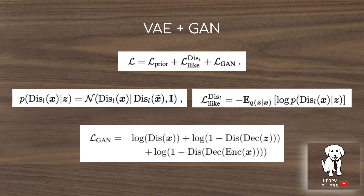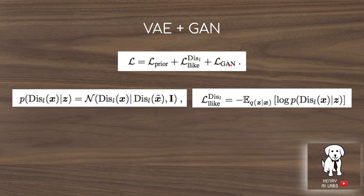Putting this all together, there are three loss functions used to train the model. First is the loss on the prior — this enforces the encoder of the VAE to be near a standard normal distribution, computed as the KL divergence between the encoded latent space and a normal distribution. The second loss term is the difference between the reconstructed image and the original image in terms of their intermediate features on the discriminator.